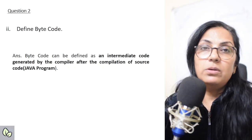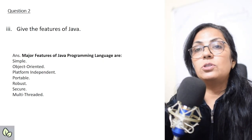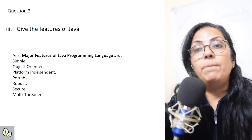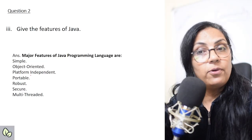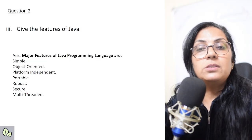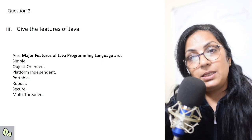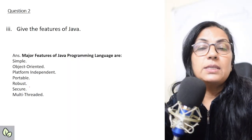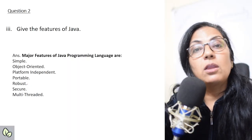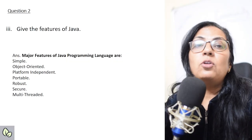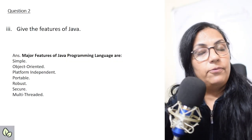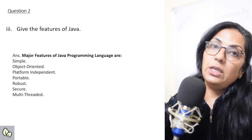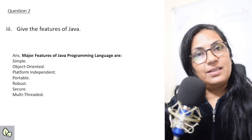The next question: 'Give the features of Java.' The major features of Java are: it is simple, object-oriented, platform-independent, portable, robust, secure, and multi-threaded. Children, this question can be covered in MCQ also — any of these features can be given. Please note that robust is indeed a feature of Java, whether you get the question in MCQ or in question number 2.